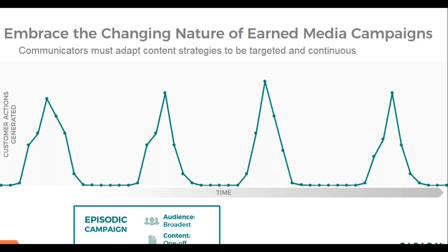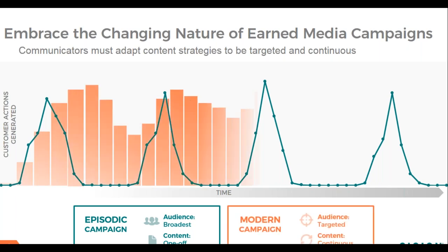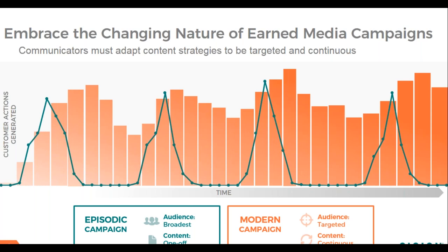Communicators need to move to a more modern campaign structure that incorporates a mix of reach with more individualized targeting. Modern comms campaigns need continuous content and the ability to segment to more targeted audiences while still ensuring strong reach. If communicators are able to push more focused content to a more targeted audience, they can see more sustained engagement from earned media campaigns.